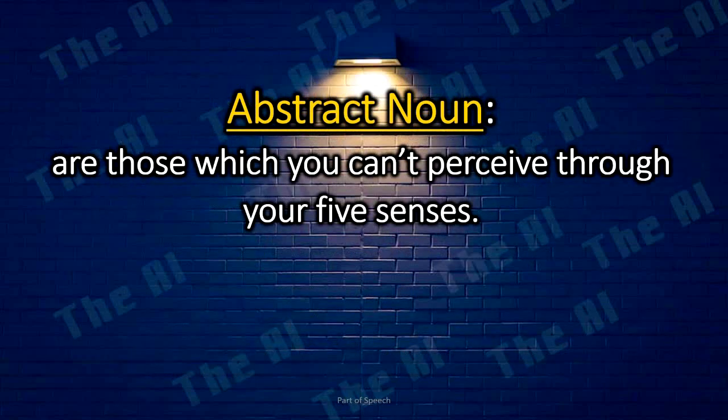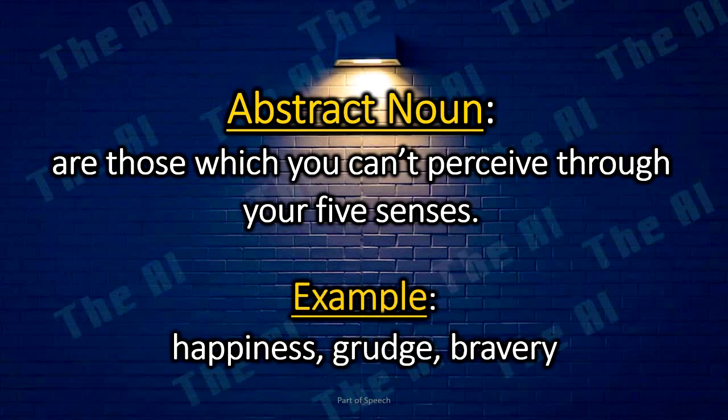Abstract nouns are those which you can't perceive through your five senses. Examples: happiness, grudge, bravery.